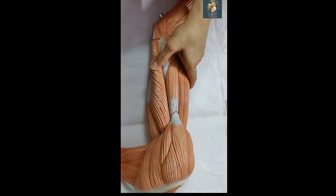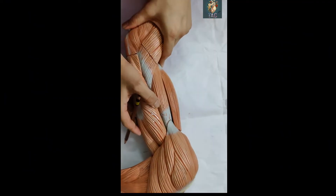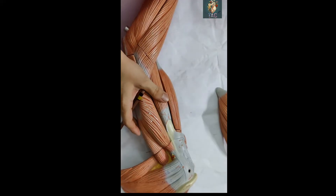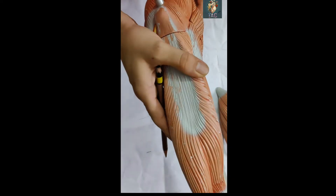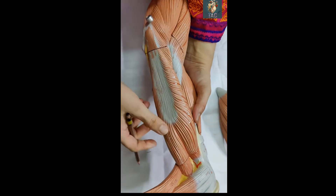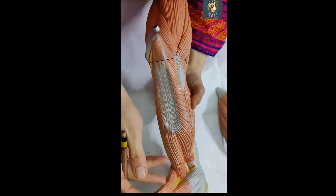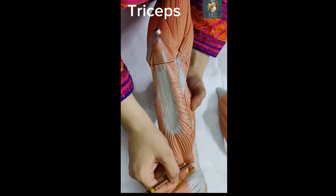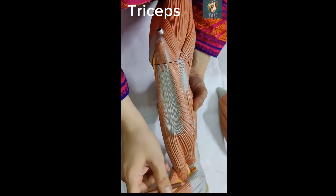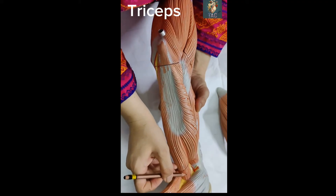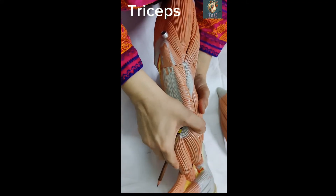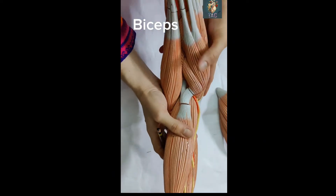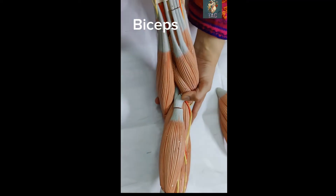After this I will remove the deltoid muscle and show you the posterior compartment. In the posterior compartment this is the triceps muscle. The different heads of the triceps are: the lateral head, the long head, and by removing the triceps muscle you can see the medial head.